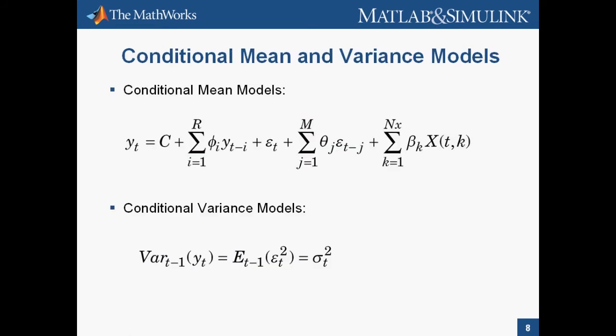The first equation on this slide is the general ARMAX model for the conditional mean. Epsilons are the innovations, the phi are the autoregressive coefficients, and the theta are the moving average coefficients. The functional form of the conditional variance of innovations determines which GARCH variation is being used for the model. In the next slide, we will see the GARCH variants available in the toolbox.